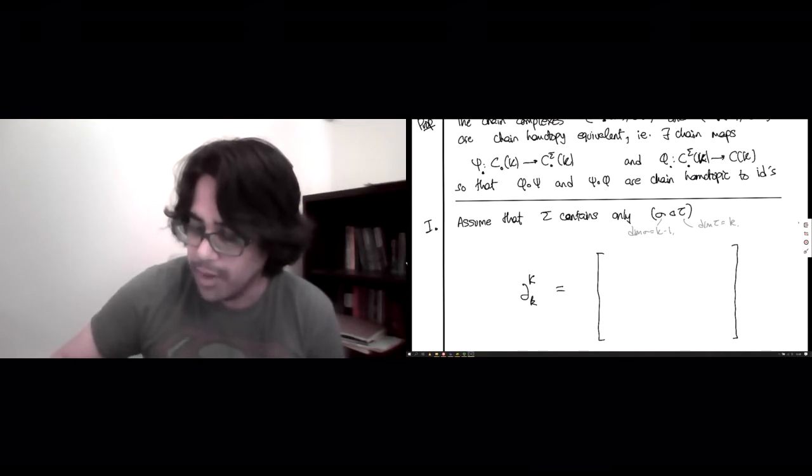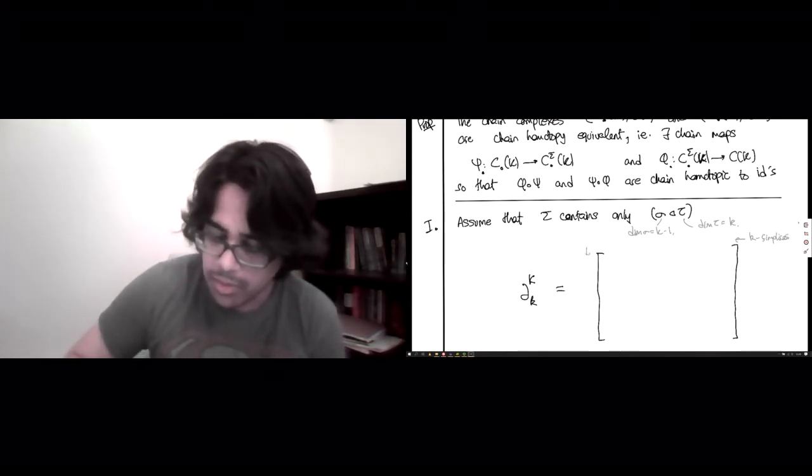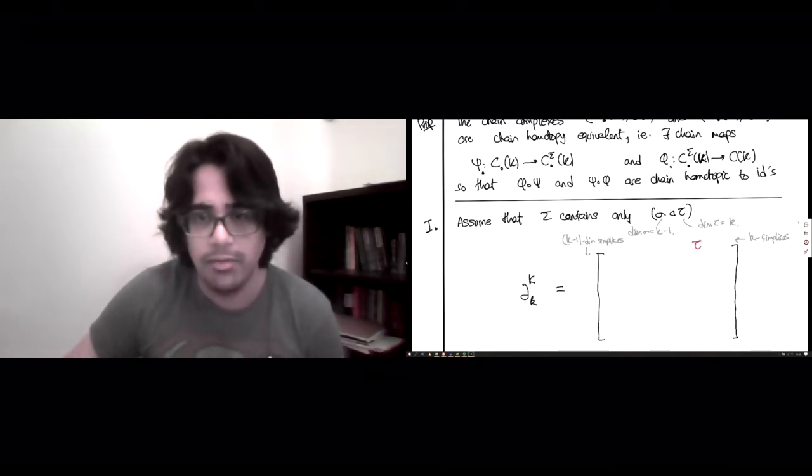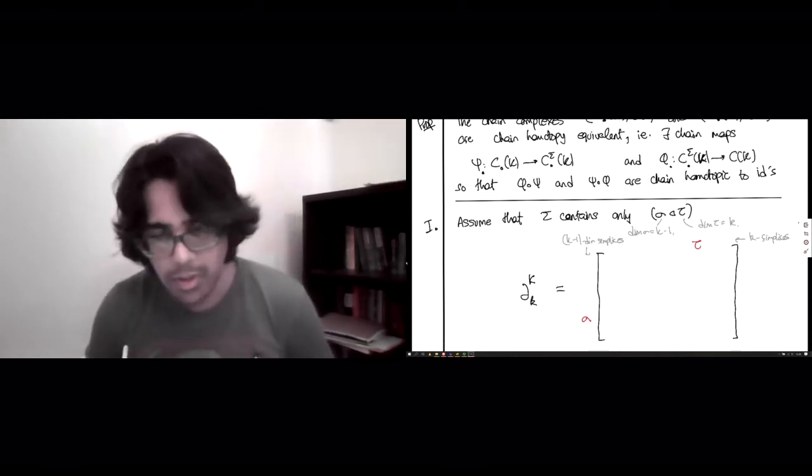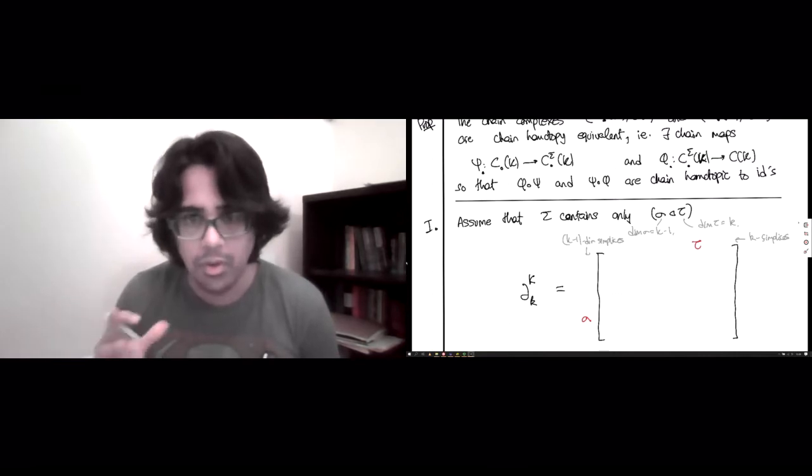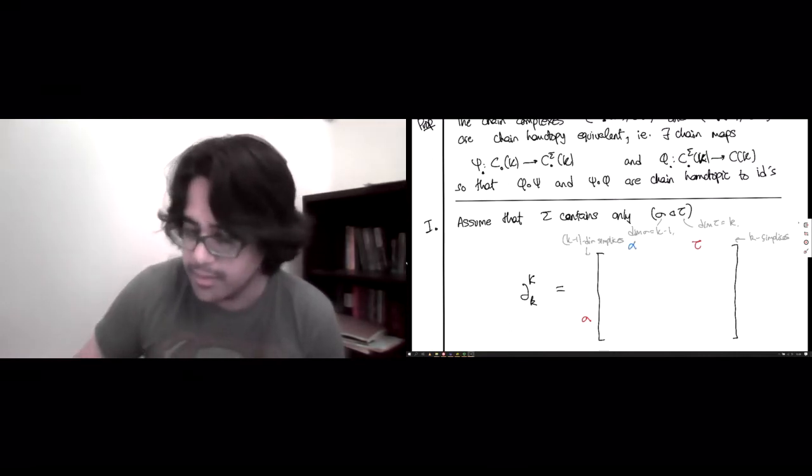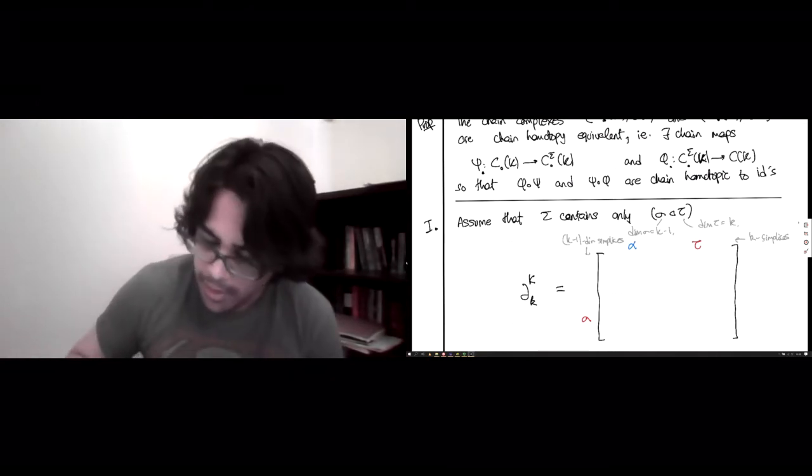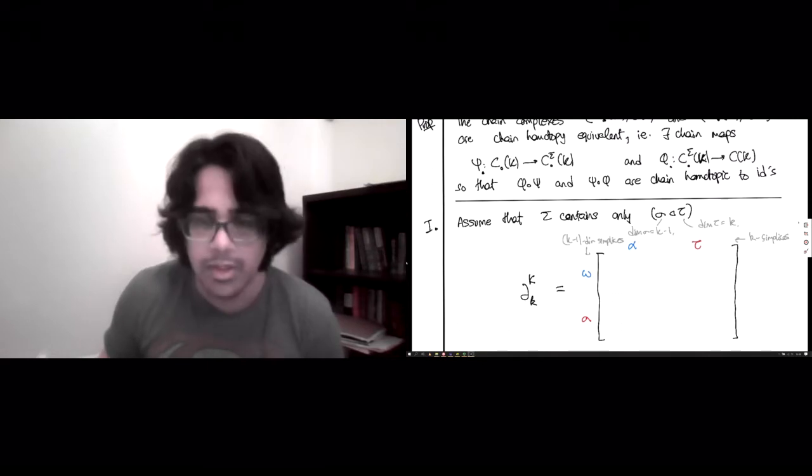So what it's going to have up here are all the k-dimensional simplices. Those are going to index the columns and the rows are going to be indexed by k-1 dimensional simplices. So let's say tau is going to be certainly one of our k-dimensional simplices, sigma is going to be certainly one of our k-1 dimensional simplices, and I also need sort of, just to explain what happens on this whole matrix, two placeholders. So let's take random, different from tau, one of the k-dimensional simplices alpha, and then another k-1 dimensional simplex omega.